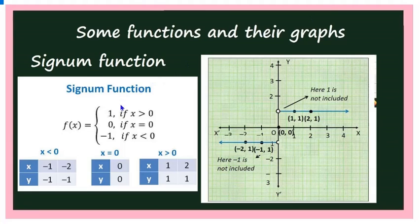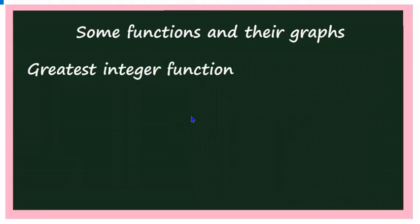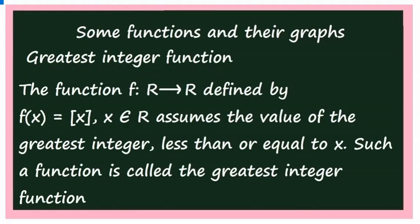The question may ask you to define the signum function, write its domain and range, and draw its graph. Now let us move to the next important function: the greatest integer function. You should understand the greatest integer function correctly. The function f from R to R is defined by f(x) = ⌊x⌋, where x belongs to R.